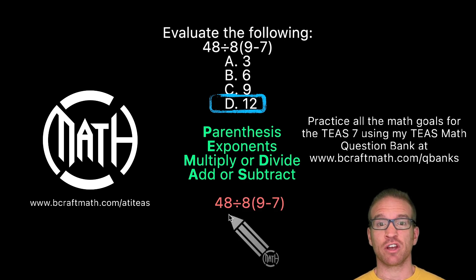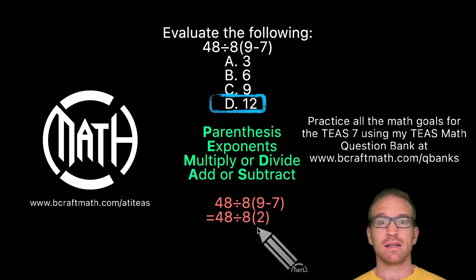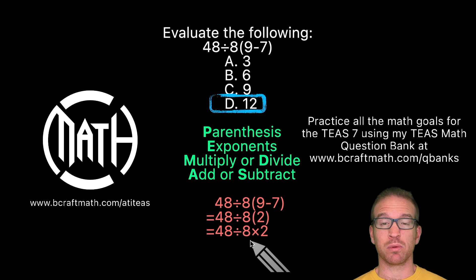So in our expression, let's go ahead and take care of those parentheses. Nine minus seven gives you two. I'm going to replace those parentheses with a multiplication symbol, because when you have a number right beside parentheses, that does mean multiply.